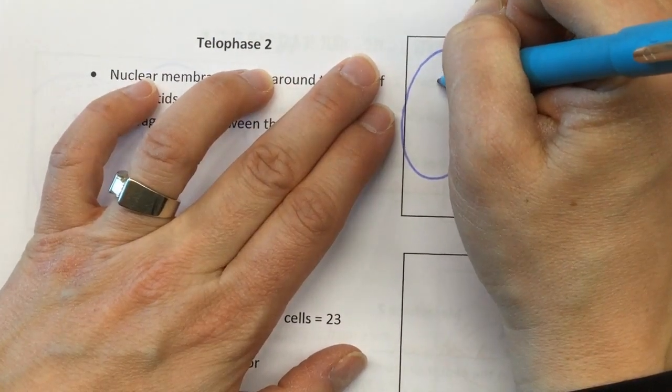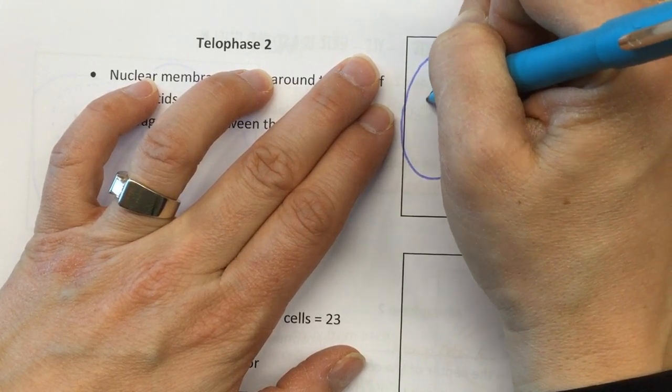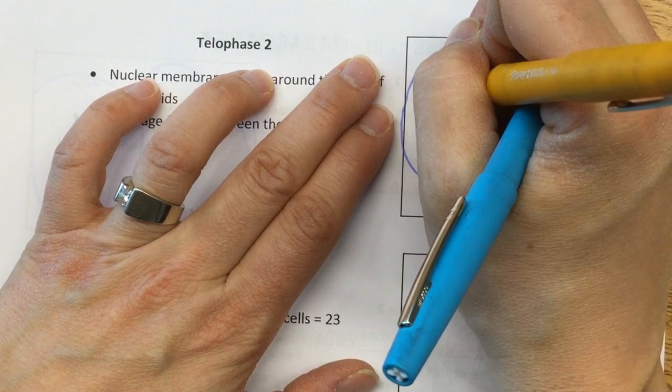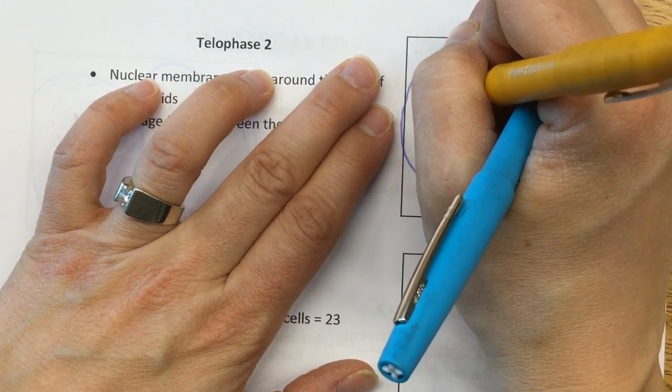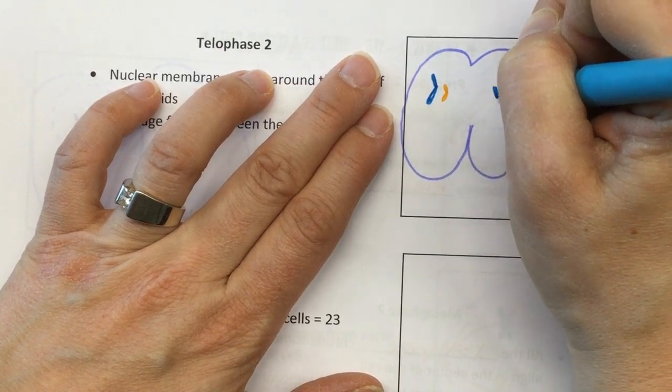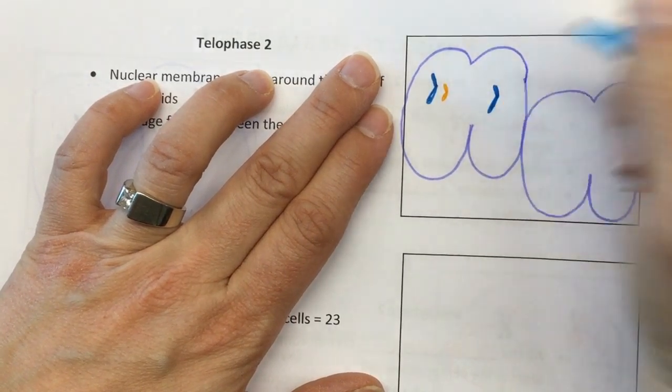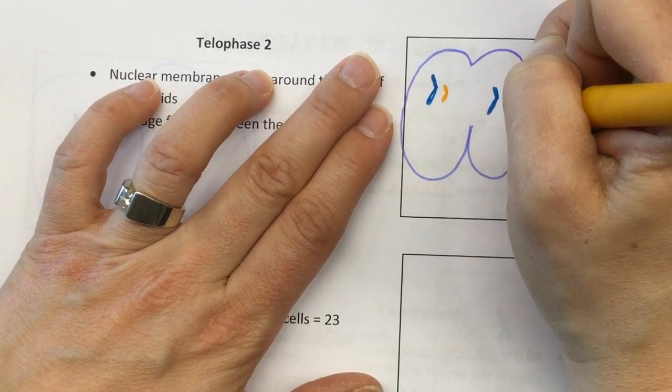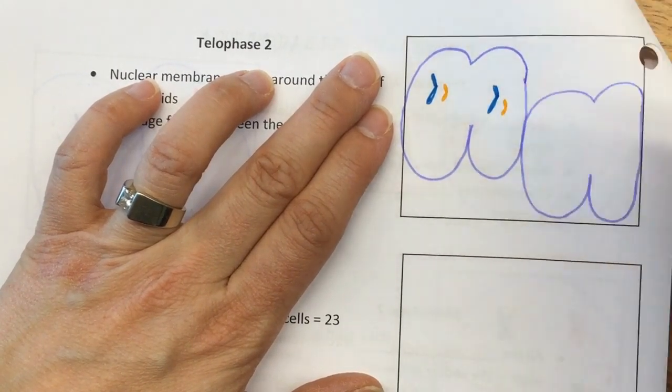Okay, so over here I'm going to have my blue and my yellow, and over here I'm going to have my blue with a little bit of pink, and my yellow with a little bit of purple.